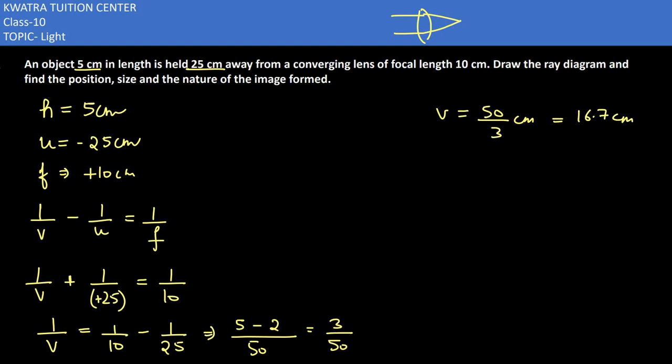Now you need to find out h'. How will you find out h'? As you know, h'/h equals what? v/u - this is the magnification formula. h' value we don't know. h value we know, which is 5. v value we know, which is 50/3.